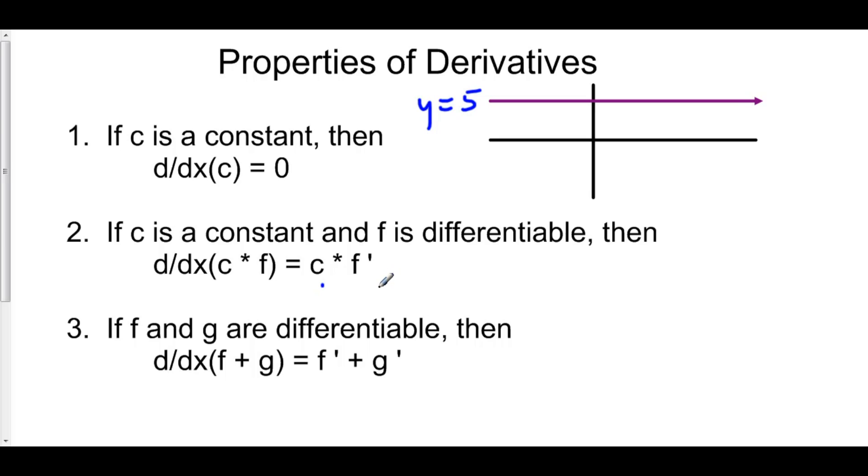What this means is, if we have the derivative of, let's say, 5 times x squared, we could pull the 5 out of the derivative and then just take the derivative of x squared.